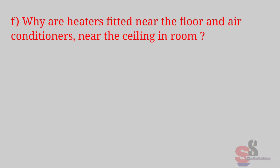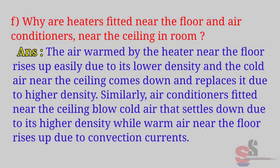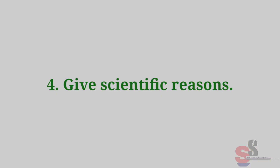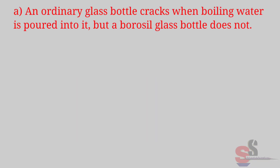(f) Why are heaters fitted near the floor and air conditioners near the ceiling of a room? Answer: The air warmed by the heater near the floor rises up due to its lower density, and the cold air near the ceiling comes down and replaces it due to higher density. Similarly, air conditioners fitted near the ceiling blow cold air that settles down due to its higher density, while warm air near the floor rises up — creating convection currents.